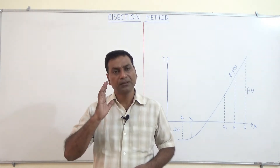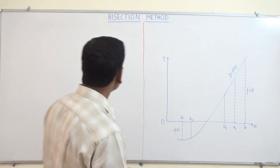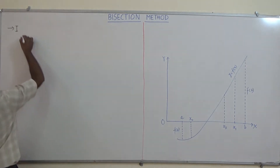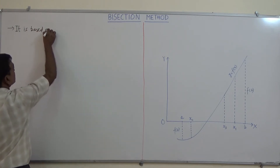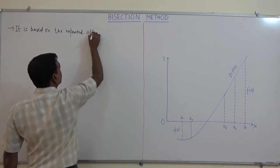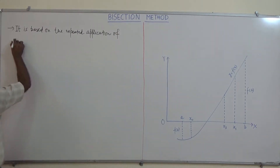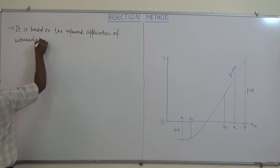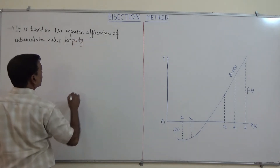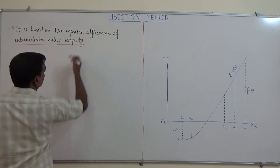First of all, we will see its principle using the graph on the right-hand side. The bisection method is basically based on the intermediate value property. We can say it is based on the repeated application of the intermediate value property.